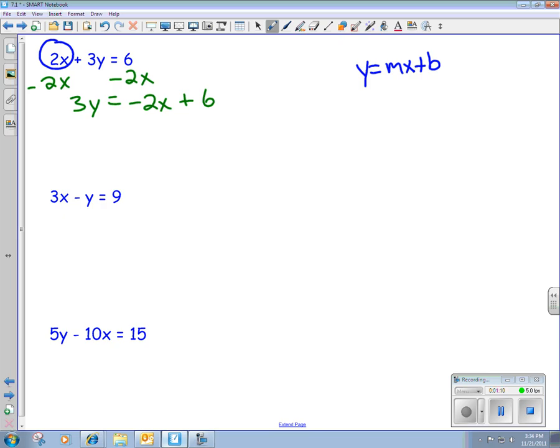Now y isn't totally by itself yet, because you still have that 3 in front. So what we're going to do is we're going to divide by 3 on both sides. So instead of it being multiplied by 3, we're going to divide by 3. So y equals, now you've got kind of a situation here where you have a fraction. So you have negative 2 3rds x, and then you still have to divide this one, but it stays positive, so plus 2, because 6 divided by 3 is 2.